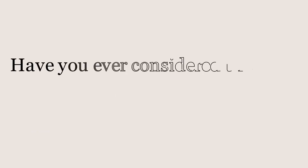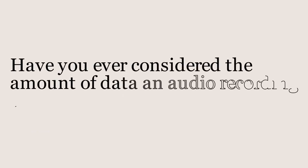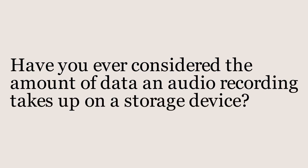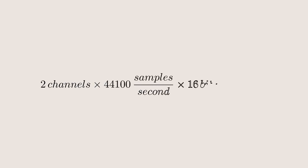Have you ever considered the amount of data an audio recording takes up on a storage device, like a CD? Audio on CDs are encoded with two channels sampled at 44.1 kHz, with a 16-bit word. What this means is that to play a song off of a CD, data has to be read at a rate of 2 times 44,100 words per second times 16 bits per word, for a data rate of 1,411 kbps.